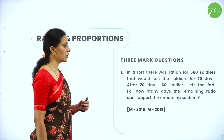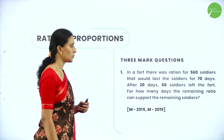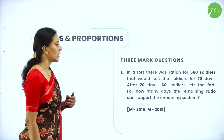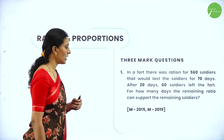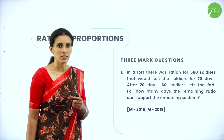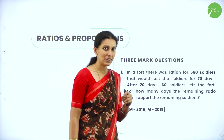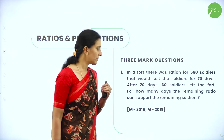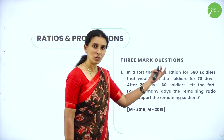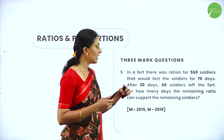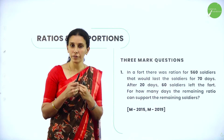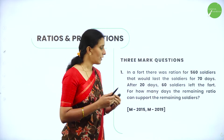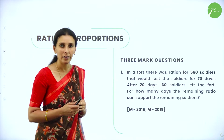In a fort there was a ration for 560 soldiers that would last for 70 days. After 20 days, 60 soldiers left. The question asks: for how many days can the remaining ration support the remaining soldiers? Initially there were 560 soldiers and the food would last 70 days, but after 20 days, 60 soldiers left, so the remaining days is only 50 days. Since 60 soldiers have left, the food will last for a few more days.